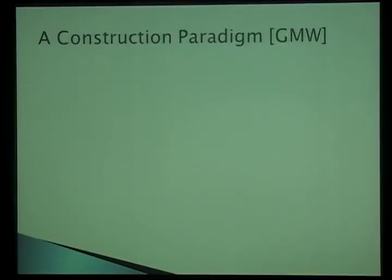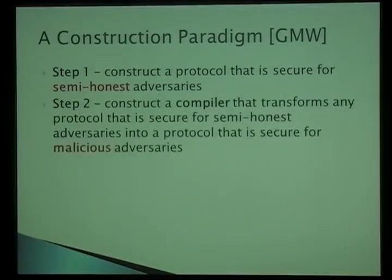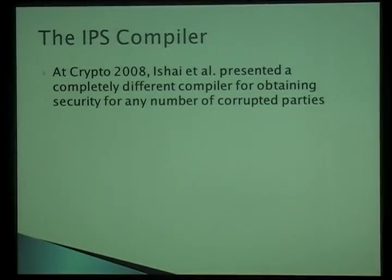This covert model captures real-world scenarios where there is some deterrent or punishment for cheating — perhaps loss of reputation or being expelled from a consortium. In 1987, GMW presented a paradigm: the first step is to construct a protocol secure against semi-honest adversaries. This is somewhat easier because you know what the adversary will do in terms of messages. The second step is a compiler that takes any semi-honest secure protocol and transforms it into one secure against malicious adversaries, using zero-knowledge proofs, commitments, and coin tossing to have each party prove it is behaving correctly.